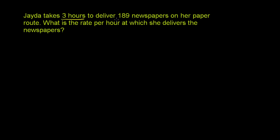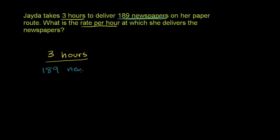Jada takes three hours to deliver 189 newspapers on her paper route. What is the rate per hour at which she delivers the newspaper? The first sentence tells us she takes three hours to deliver 189 newspapers — so we have three hours for every 189 newspapers. But we want to figure out the rate per hour, or the newspapers per hour.